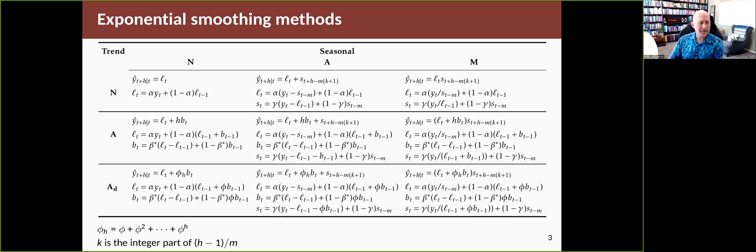If you're looking across the rows, for example, you can see that the forecast equation when there's no trend is just as a level. When you put in the seasonality without the trend it just adds in seasonality or multiplies seasonality. When you do have a trend it adds in the h·bt to each of those three equations.